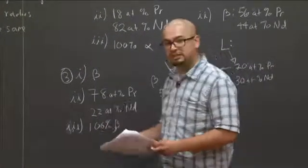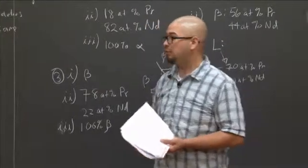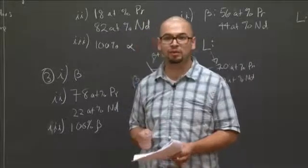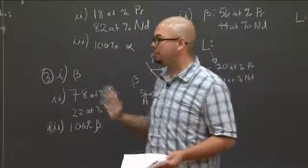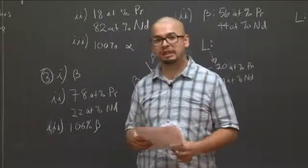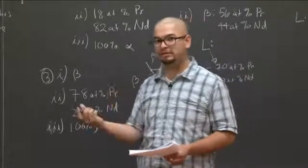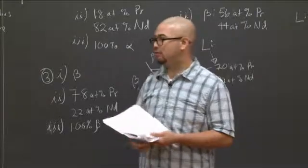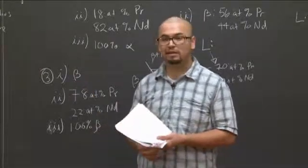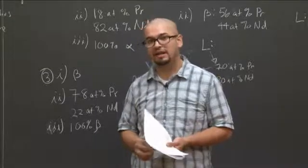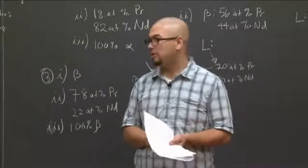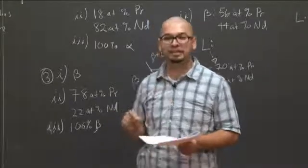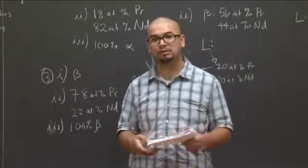So that pretty much does it for this problem. Knowing how to read phase diagrams, knowing how to apply the lever rule and where to apply it, will allow you to very easily solve the problem. A lot of students make the mistake of trying to apply the lever rule when you have a pure phase — that makes no sense, because the lever rule calculates what fraction of the phases are present in an equilibrium mixture. Keep in mind that you can only do that when you have a region where two phases are coexisting in equilibrium.